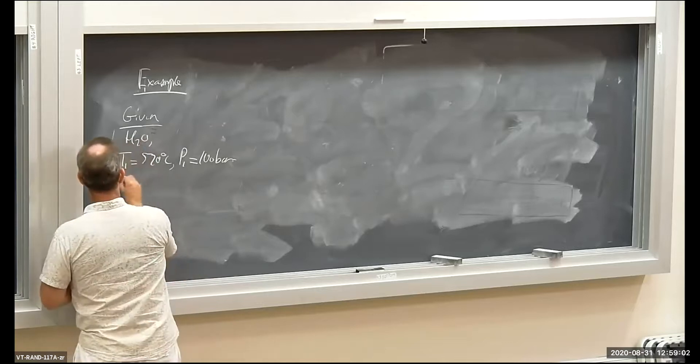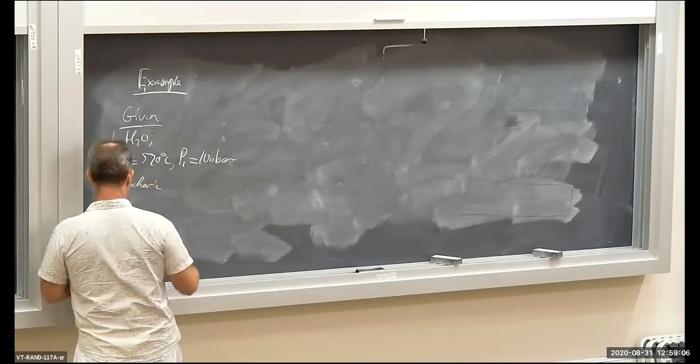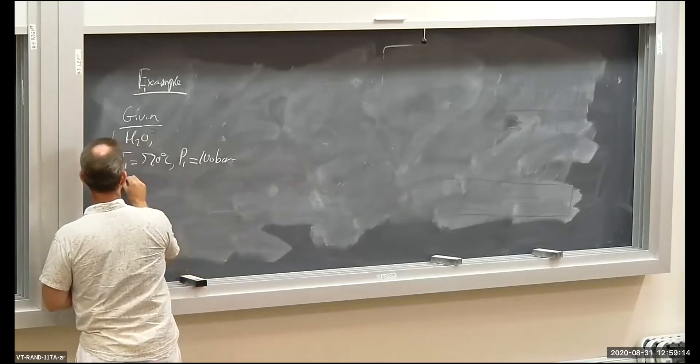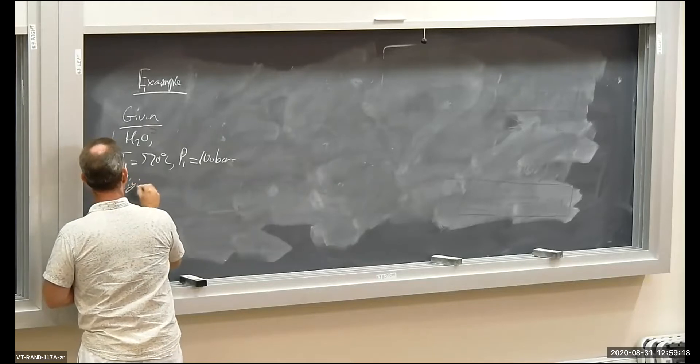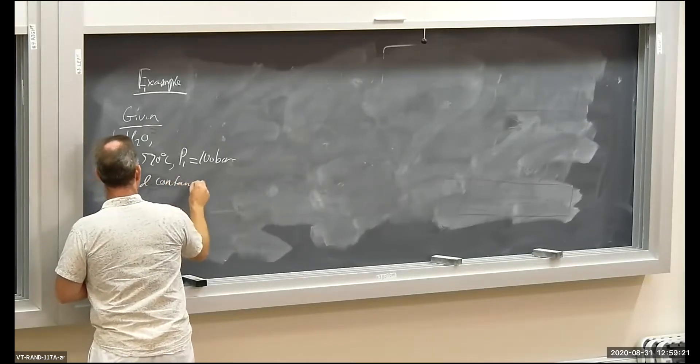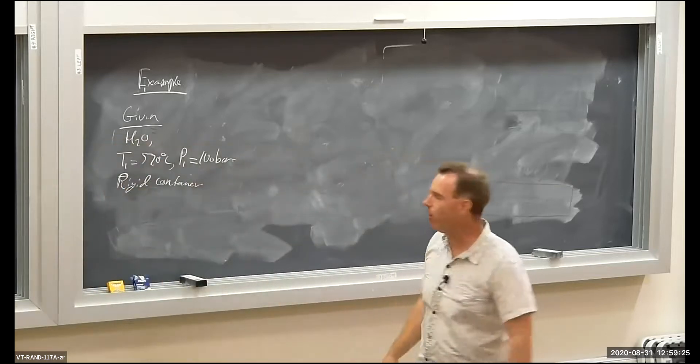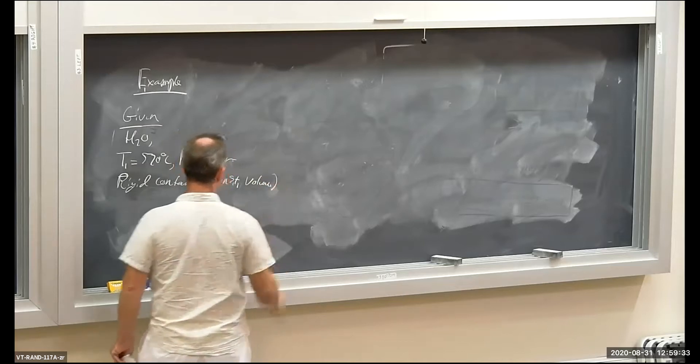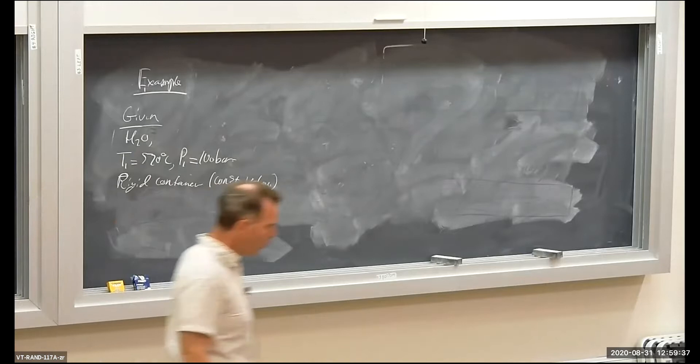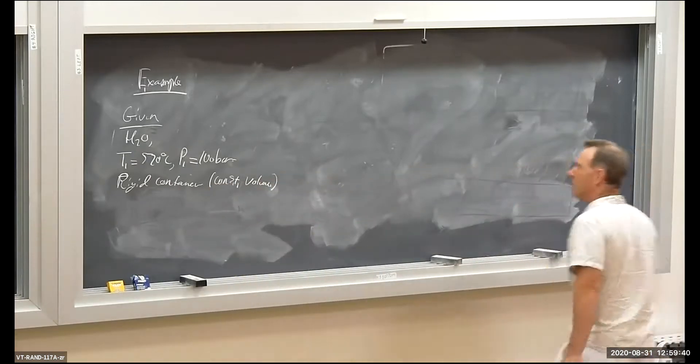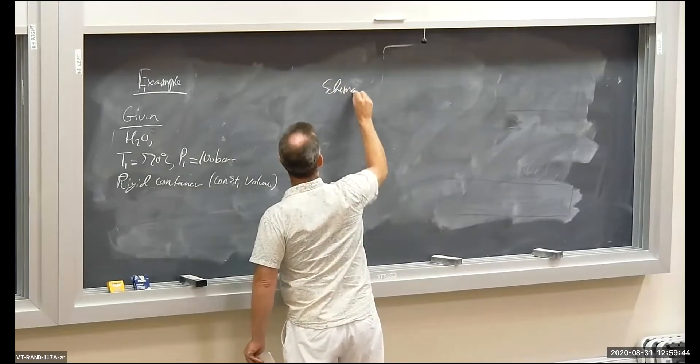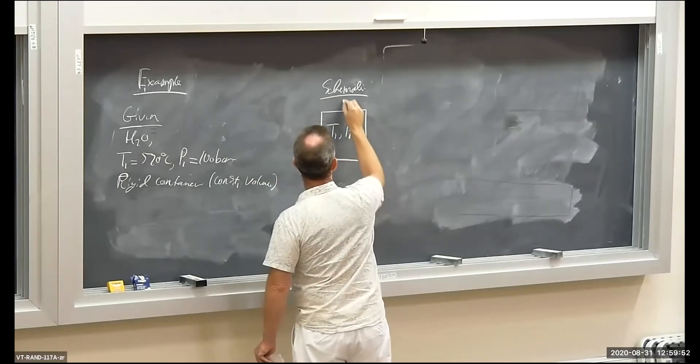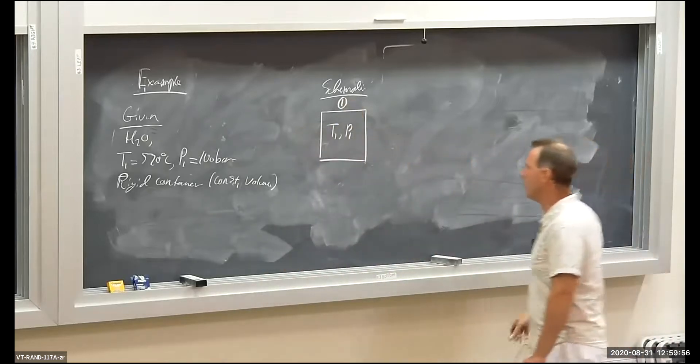And then we have an iso- Hmm, I'll tell you what. This H2O is in a rigid container. Rigid container. What do I mean by rigid? I mean constant volume. No change in volume, rigid container. So this H2O starts off at T1 and P1 in a rigid container. Let me put up the schematic. So here's our rigid container. And initially we have a temperature T1 and P1. So this is state one right here. So we have H2O in a rigid container.